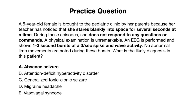Interestingly, with vasovagal syncope, there is often a set of prodromal symptoms like pallor, diaphoresis, or palpitations, which occur prior to the loss of consciousness. And in Absence seizures, these occur abruptly and so there is no prodrome here.